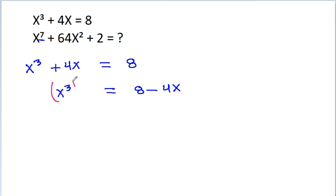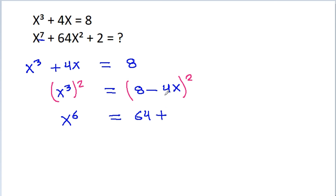So, if we square both sides, then x cube squared will be x power 6, which is equal to 8 squared, that is 64, minus 16x square, minus 2 times 8 times 4x, which is 64x.